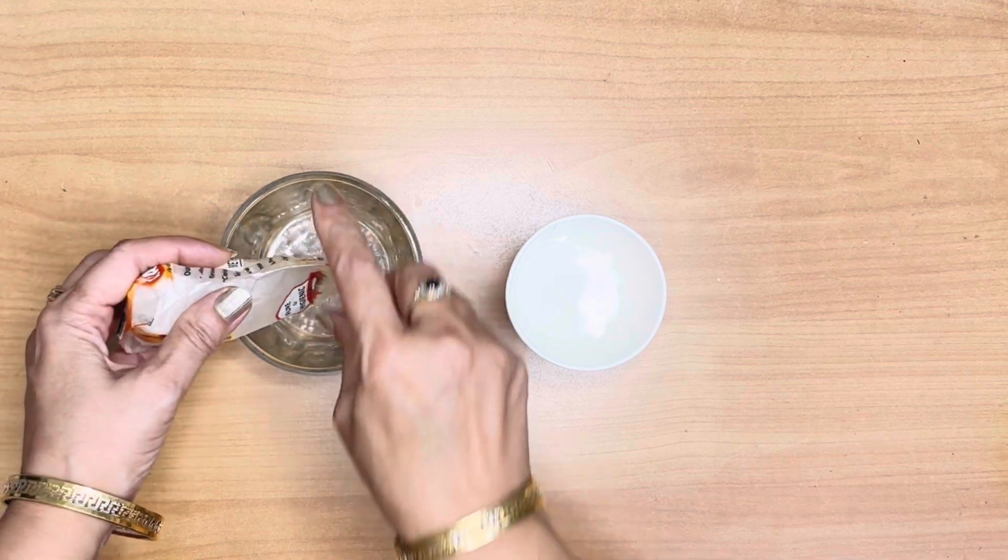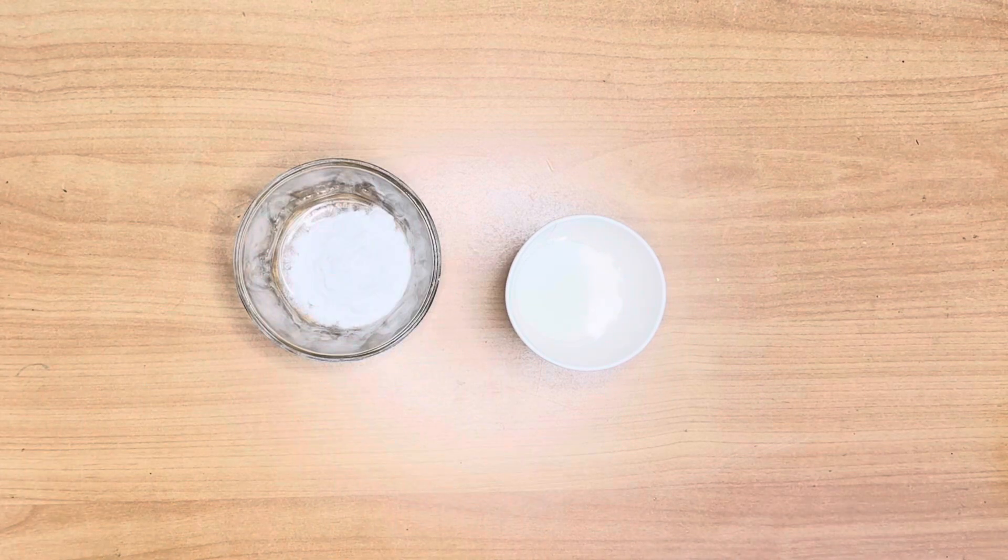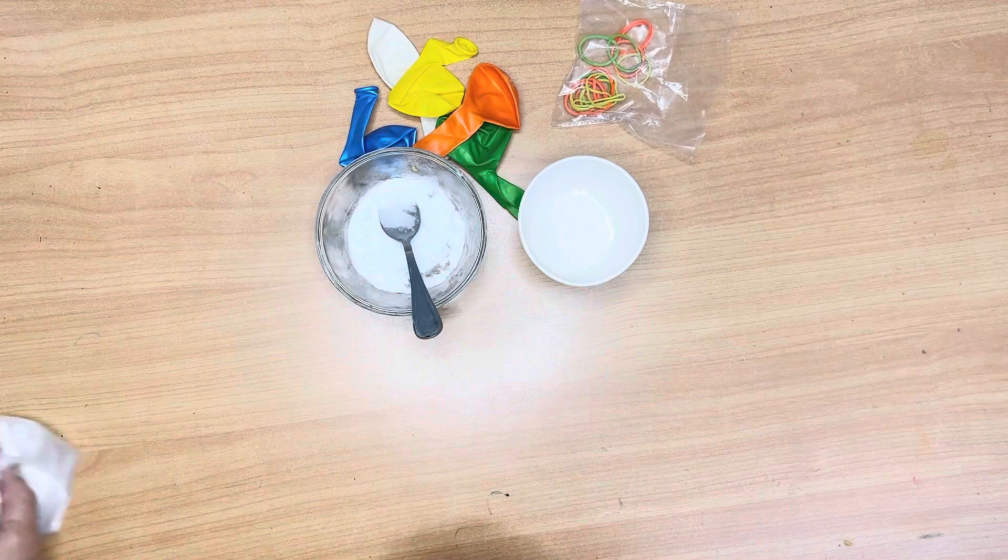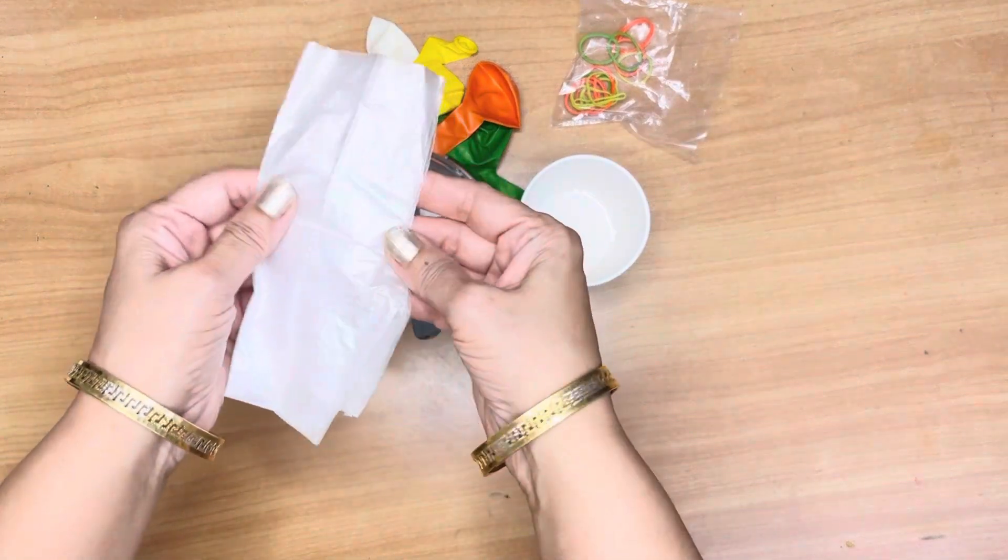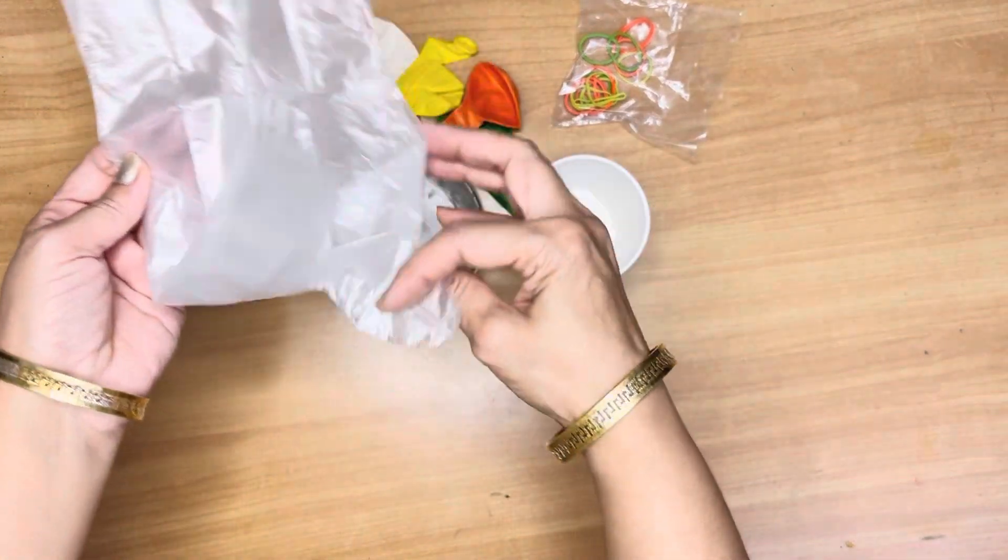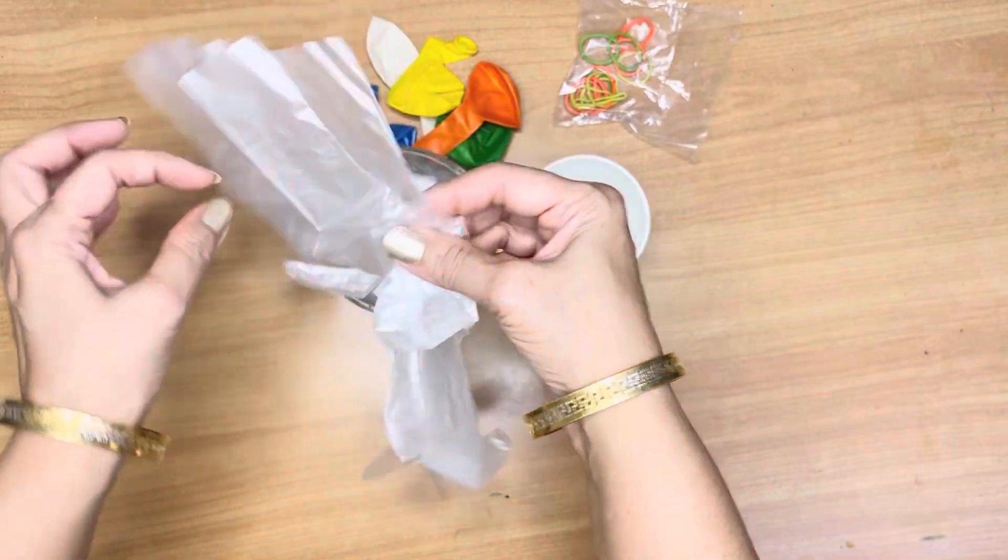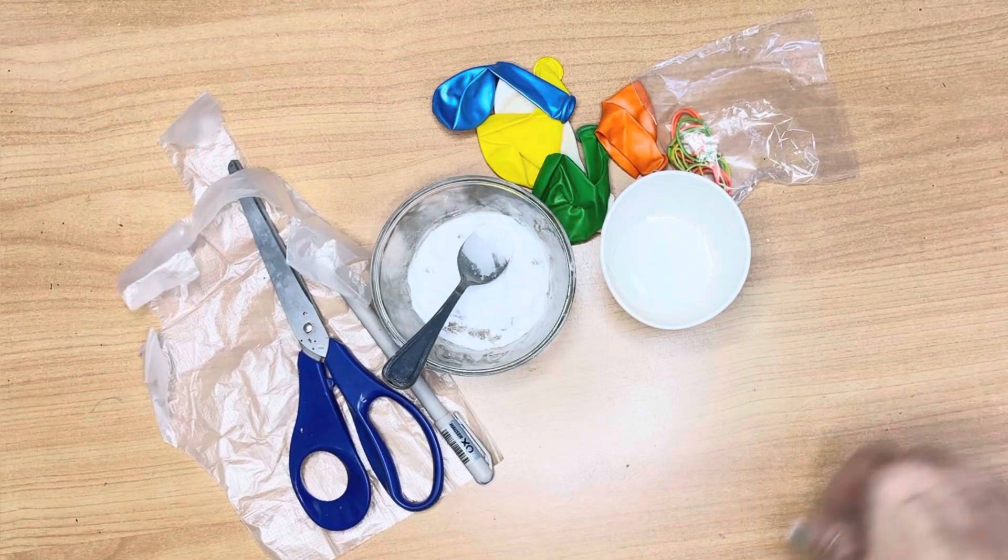Here's what you need. White vinegar, baking soda, a balloon, one thin transparent glove, a spoon, a marker, rubber band, an empty bottle.